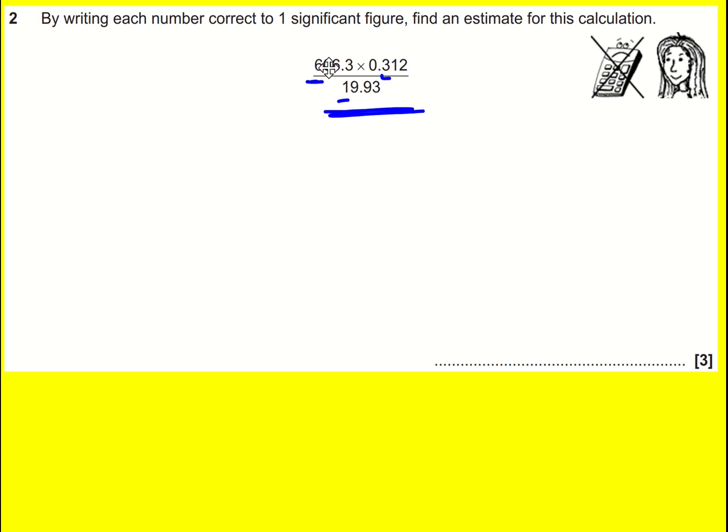So we look at the first significant figure and we decide do I round it up or keep it the same. The six is followed by a zero so I'm going to keep the six the same. I need to put zeros in to show my place value.